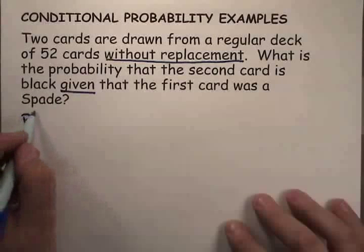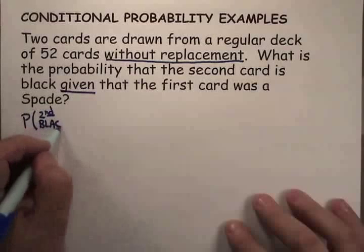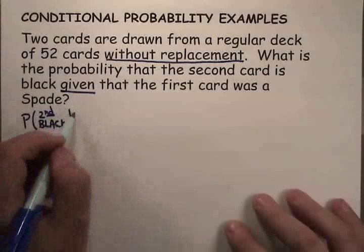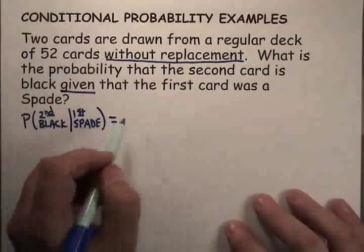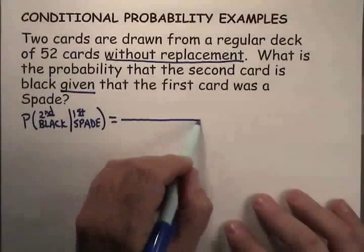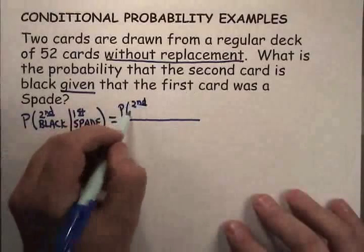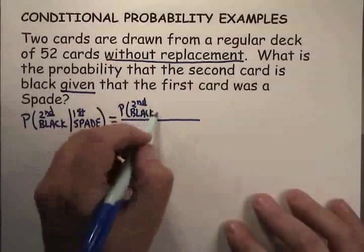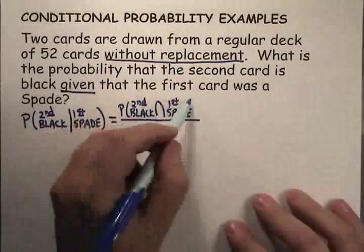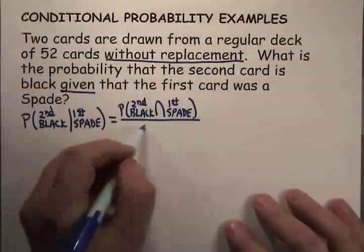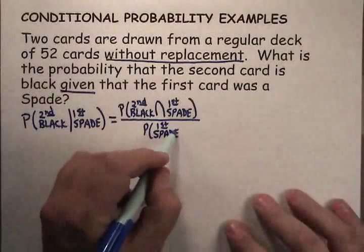We want to know the probability that the second card was black, given that the first card was a spade. That is, the probability that the second card is black and the first card is a spade, divided by the probability that the first card is a spade.